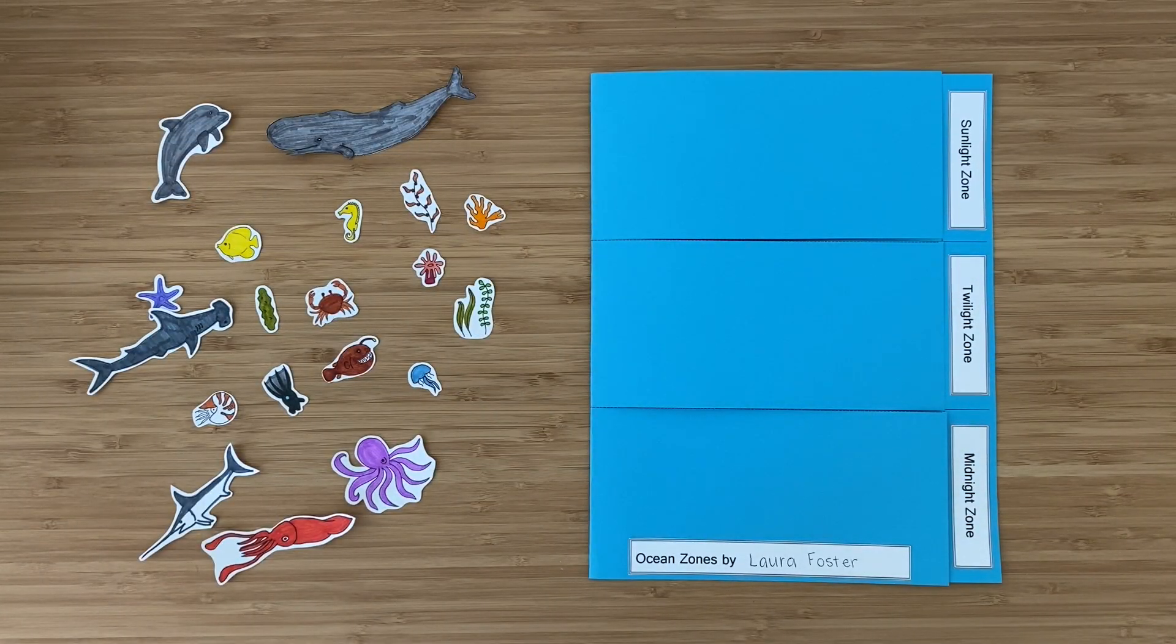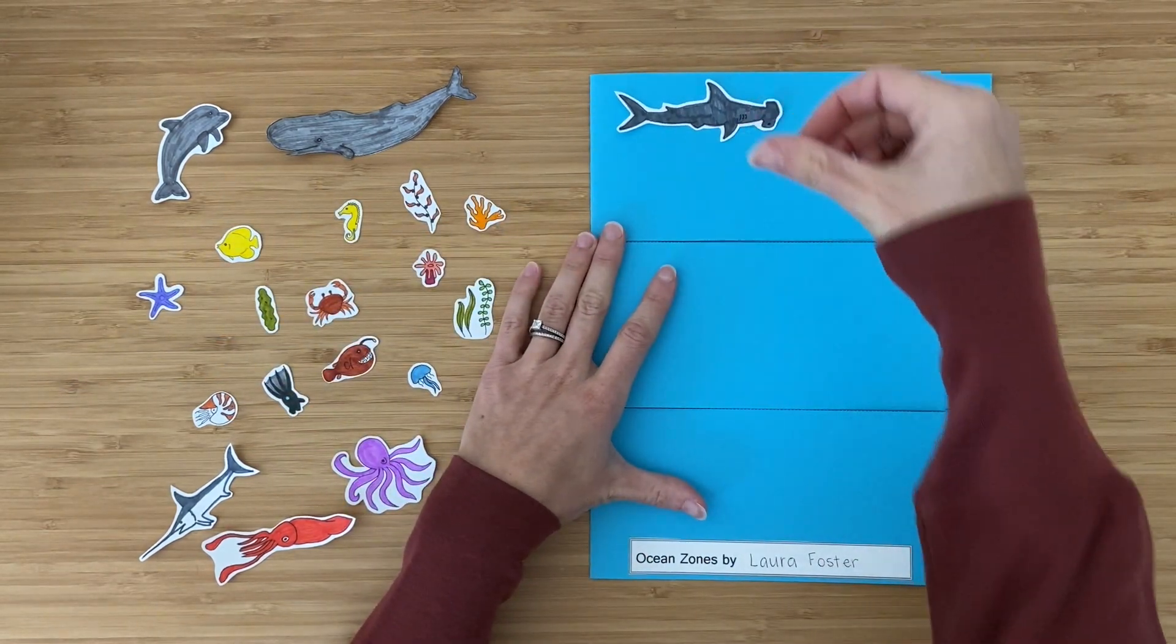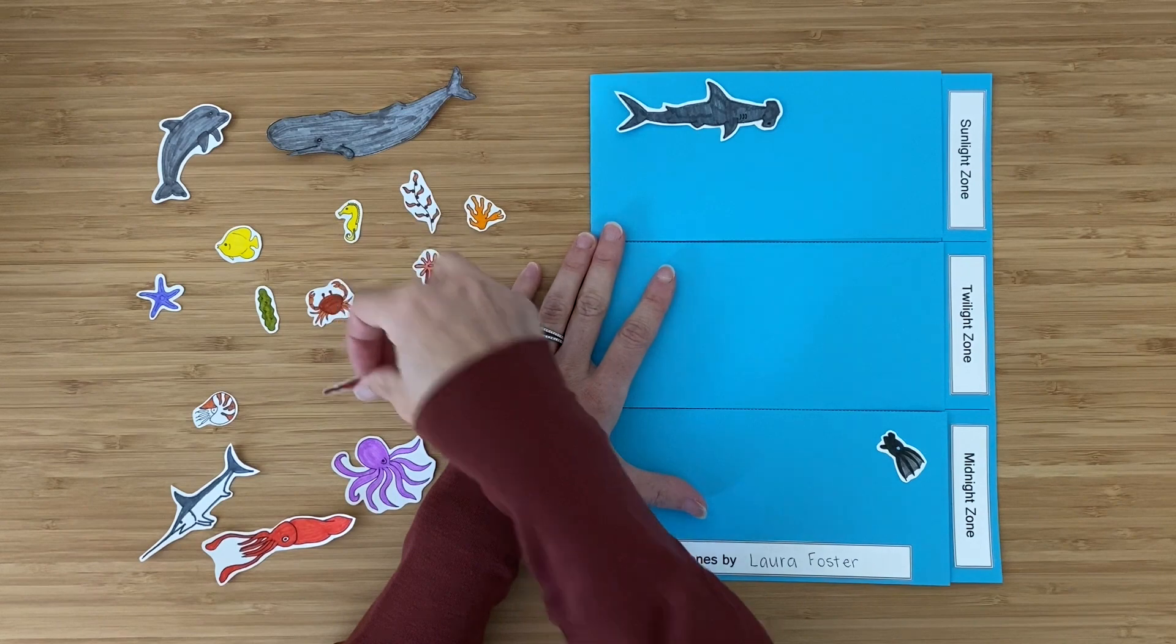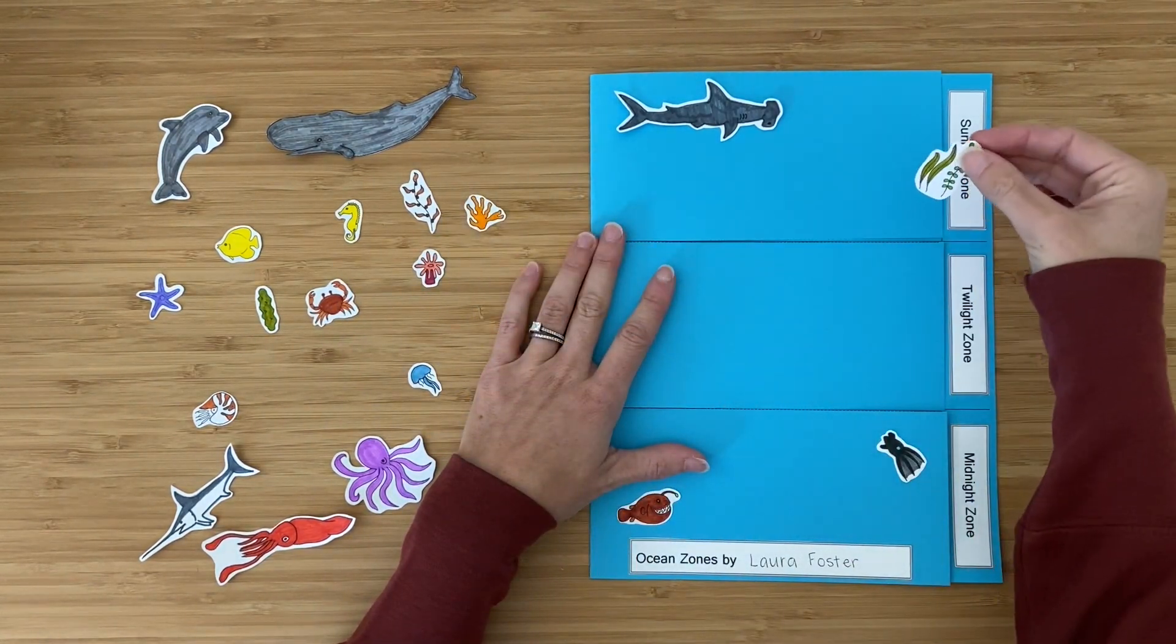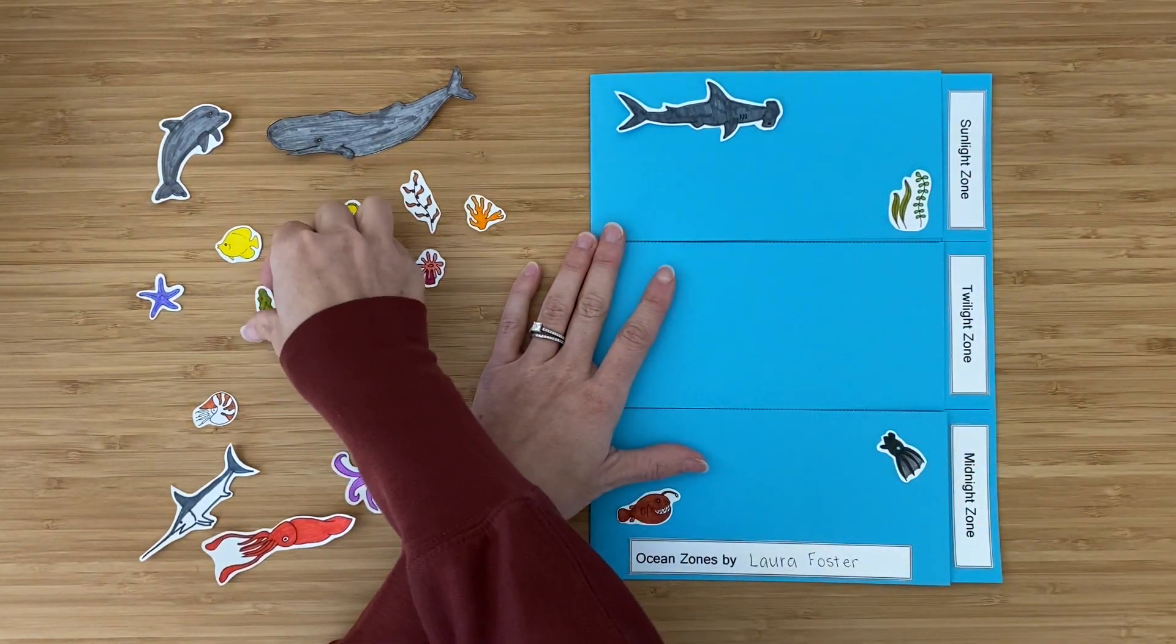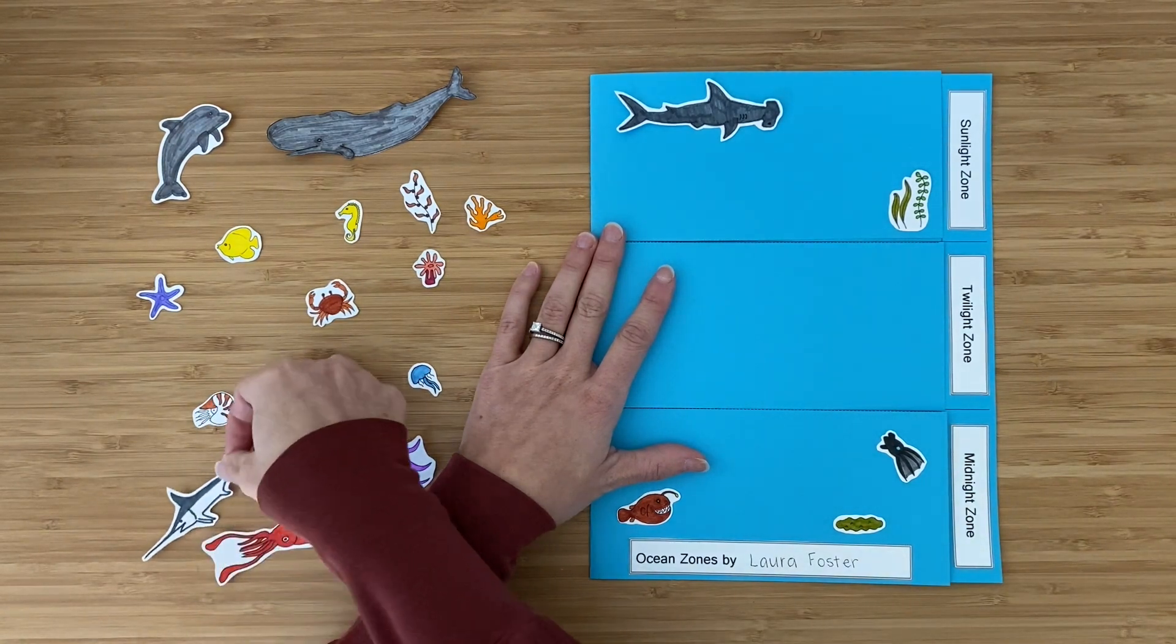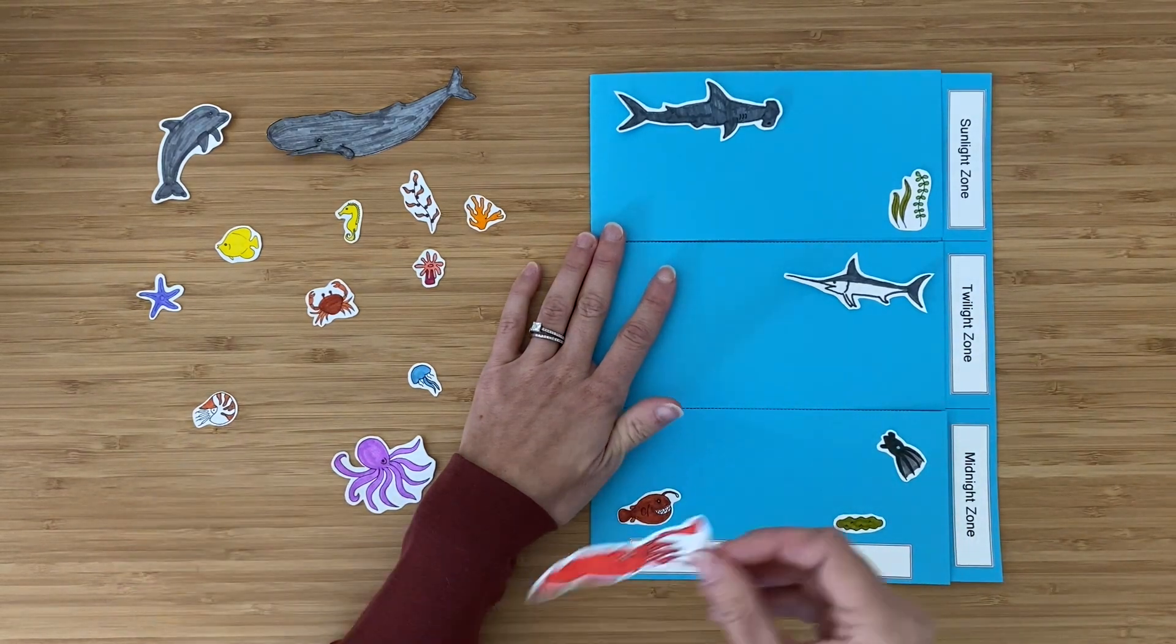As you finish cutting out the sea life, start placing it where it belongs in each zone on your ocean zones pages. Keep in mind that some of the sea life can be found in more than one zone, whereas others can only be found in one. Like the seaweed has to be in the sunlight zone. It needs the sun to grow. But sea cucumbers could be found in any zone. So I chose to place those things that could be found in more than one zone in the lowest zone in which they could be found.